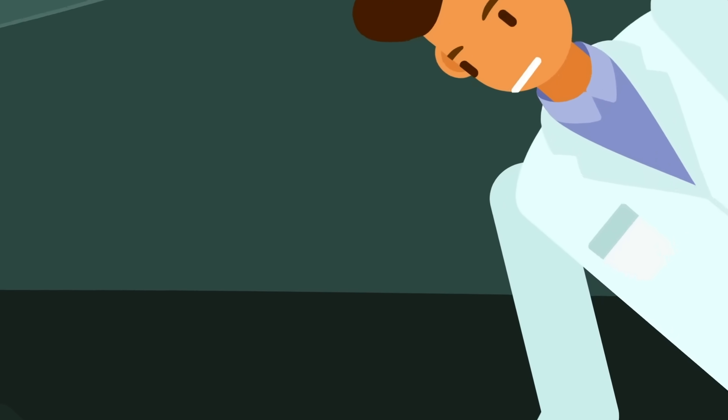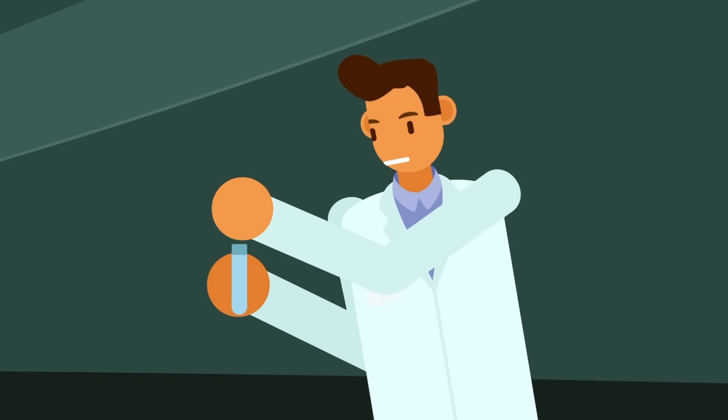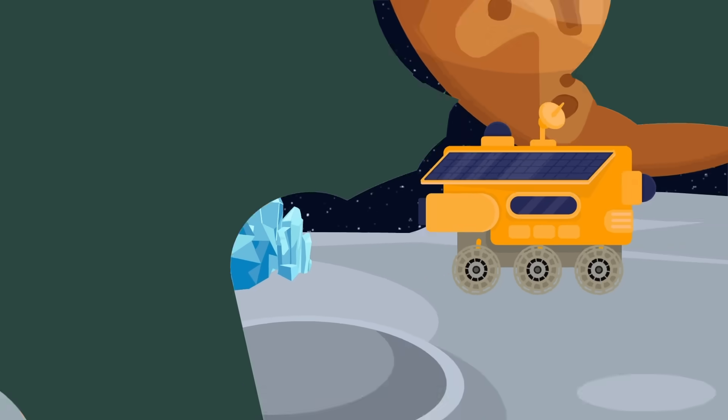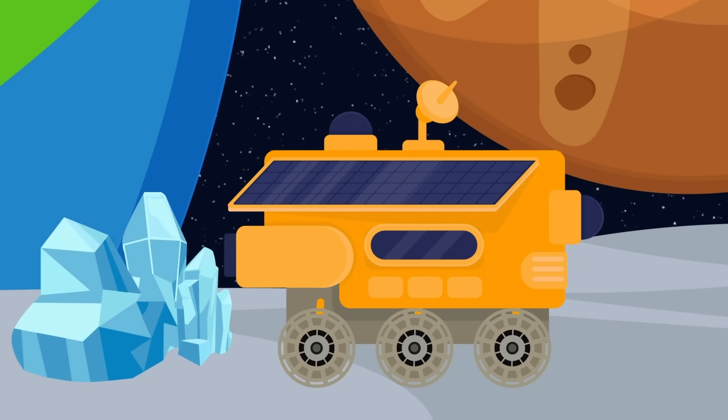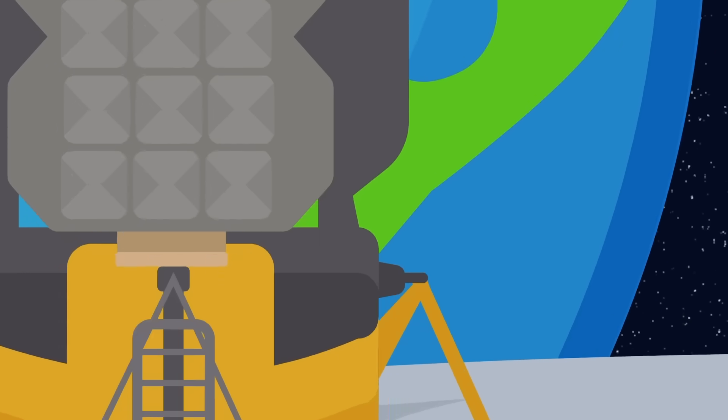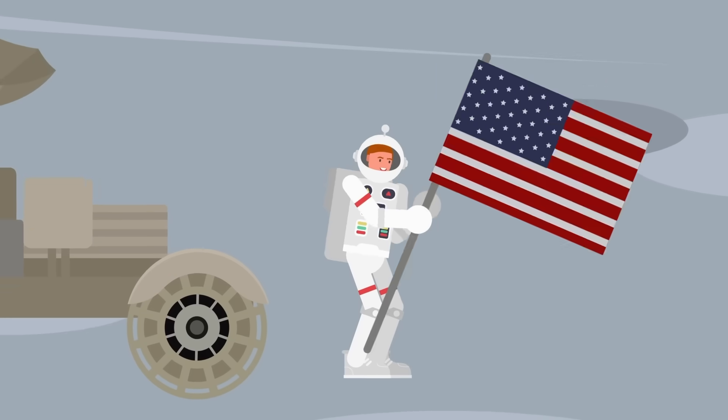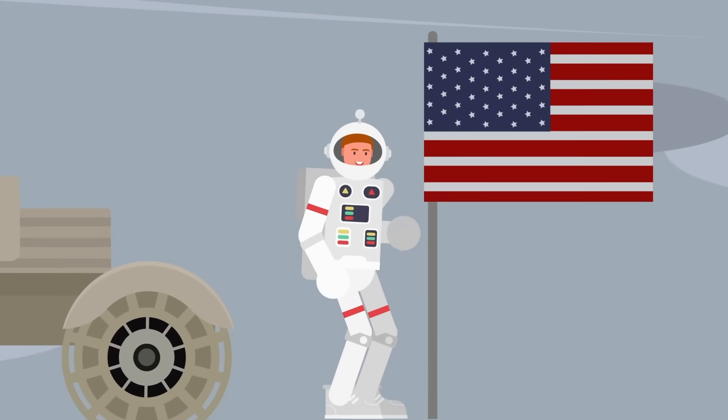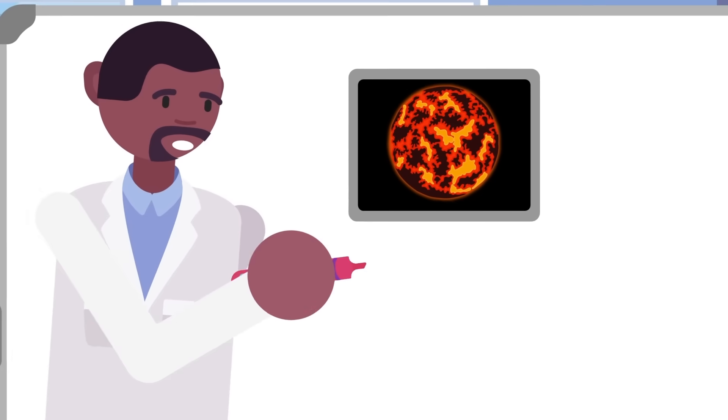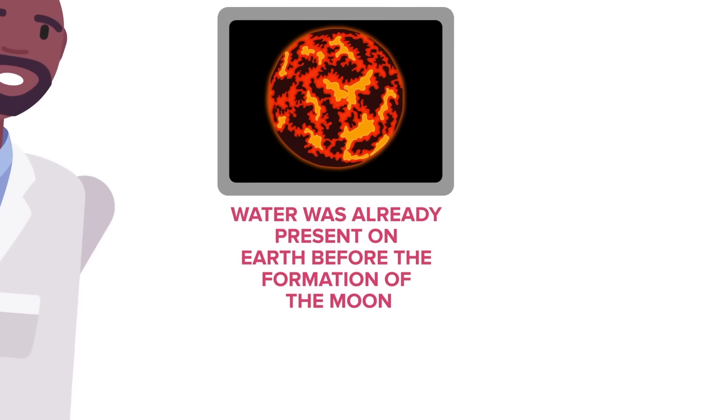To back up this hypothesis, scientists have studied the isotope ratio of water in the Earth and compared it with meteors that are found in the asteroid belt. To get the evidence, they went pretty far, including collecting samples on the Apollo 15 and Apollo 17 missions. This was the best evidence yet that water was already present on Earth before the formation of the Moon.